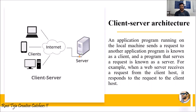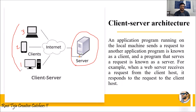Coming to the client-server architecture: an application program running on the local machine that sends a request is known as a client. Considering this diagram, we have three clients — one is the desktop, one is the phone, and one is the laptop — and all three clients are trying to communicate with each other. A program that serves this request is known as a server. In order to have good communication between all three clients, a server helps in transferring the data.